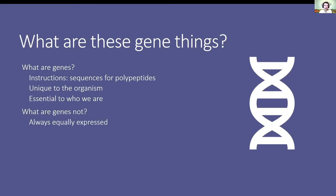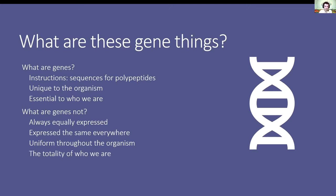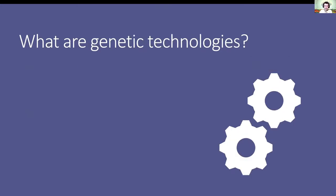Genes are not all expressed all the time, in the same way, in every cell and every individual. They're not even uniform throughout the organism — your different cells have different DNA through mutations that accumulate in different tissues. You are multitudes, which is really cool. Genes are also not the only feature of who you are, and most importantly, genes are not schematics.